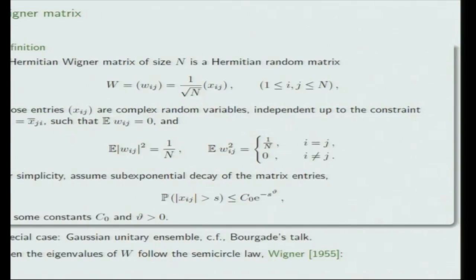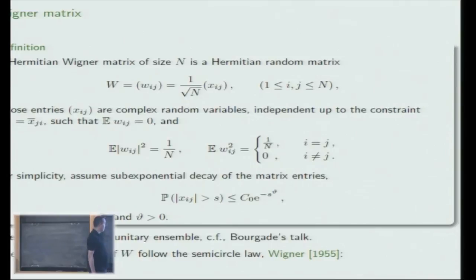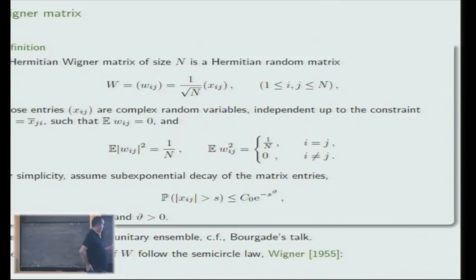Let me start with a Wigner matrix. It's a Hermitian random matrix of size N whose entries are complex random variables that are independent up to the symmetry constraint and centered. I put in here 1 over root N and I assume that the variances of the W_{ij} satisfy certain conditions. For simplicity, I will assume that the distribution of the X_{ij} satisfy a sub-exponential decay, with constants C and theta that are strictly positive.